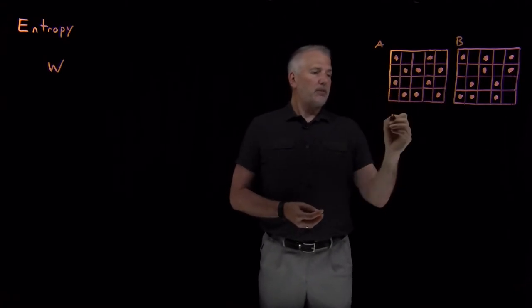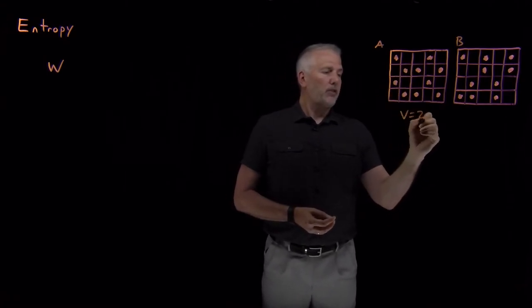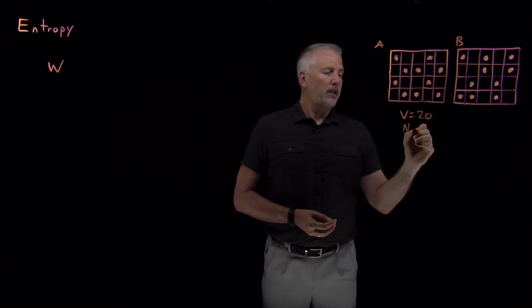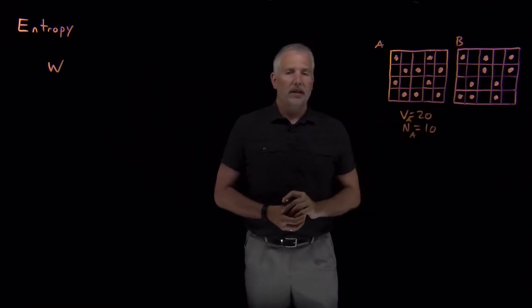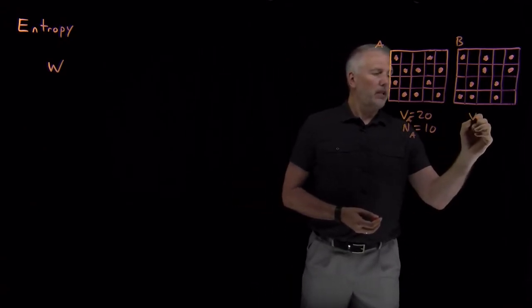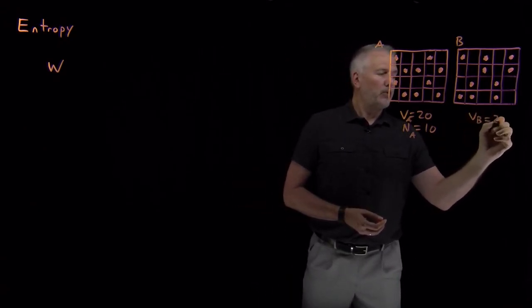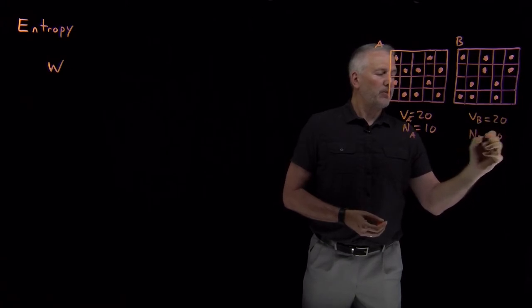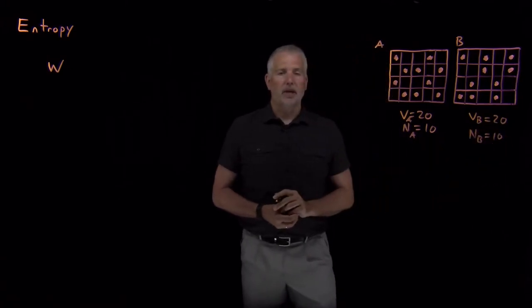The first system, I've drawn a box with a volume of 20 and N. So for System A, the volume is 20 and I've drawn 10 molecules in the box. For System B, the volume is also 20 and I've put 10 molecules in that box.